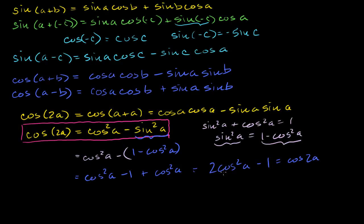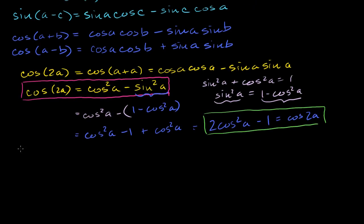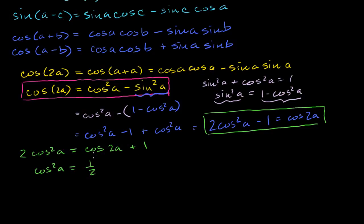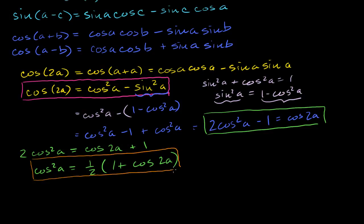Now, what if I wanted an identity for cosine squared of a in terms of cosine 2a? We can solve for it: adding 1 to both sides gives 2 cosine squared of a equals cosine of 2a plus 1. Dividing both sides by 2, we get cosine squared of a equals one-half times (1 plus cosine of 2a). This is sometimes called the power reduction identity.